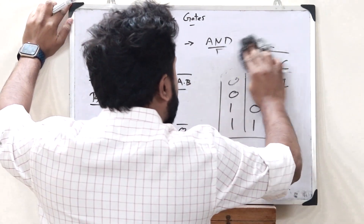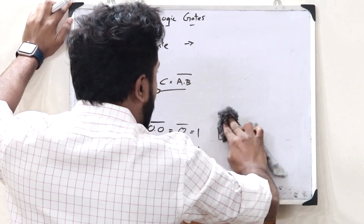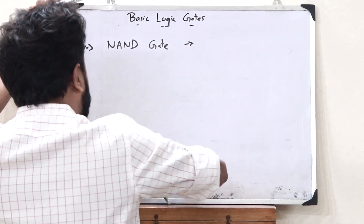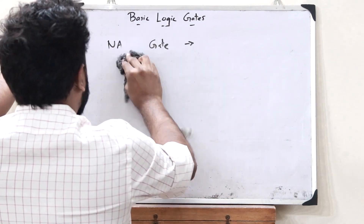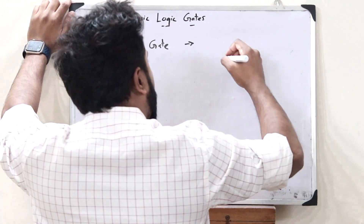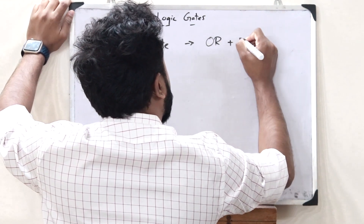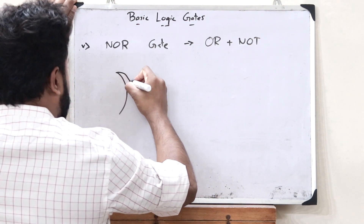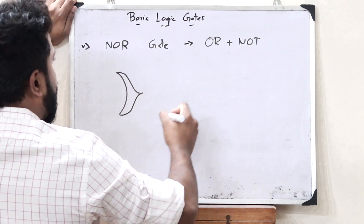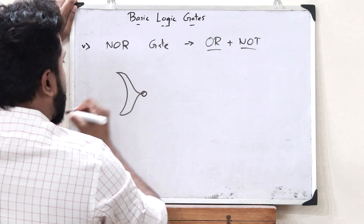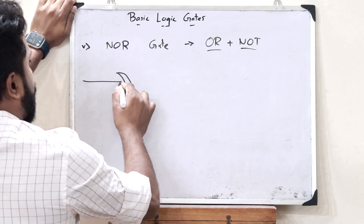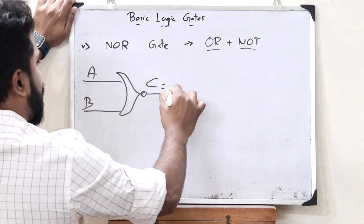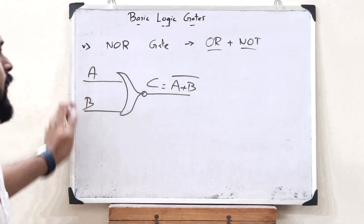Just like how we constructed a NAND gate, we can also have a NOR gate. A NOR gate is basically the combination of an OR gate and a NOT gate. We take an OR gate, and then apply the NOT operation. So we have two inputs A and B, and an output C, which is equal to (A OR B), the whole complement.